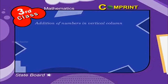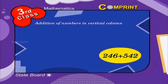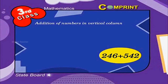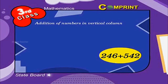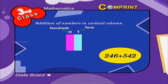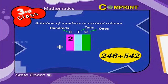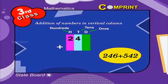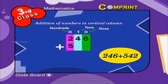Addition of numbers in a vertical column. Let us add without carrying. For example, 246 plus 542. Step 1: first, let us arrange the numbers in columns according to their place values — hundreds, tens, and ones. Two hundreds plus four tens plus six ones. Five hundreds plus four tens plus two ones.